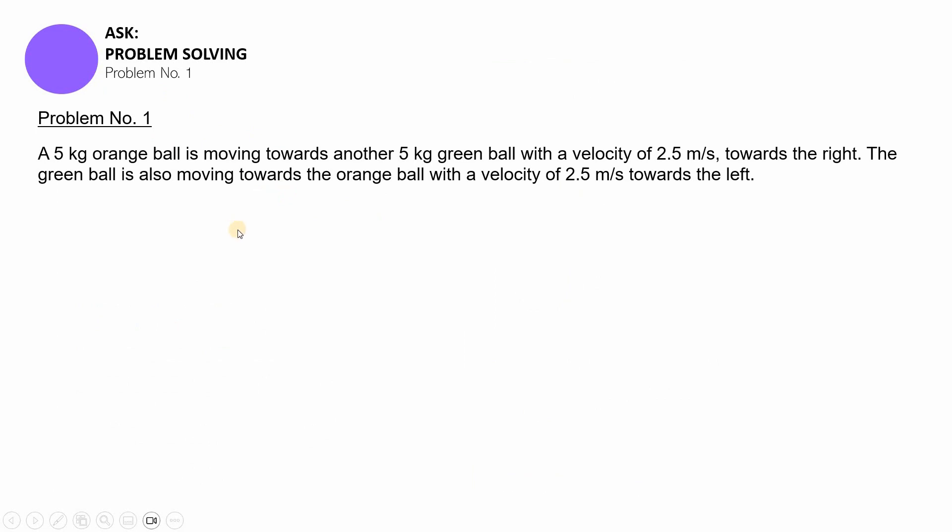So the problem goes, a 5 kilogram orange ball is moving towards another 5 kilogram green ball with a velocity of 2.5 meters per second. So there are two balls over here, an orange one and a green one. And then, we have to clarify that the orange ball is the one going towards the right. And then the green ball is also moving towards the orange ball, but it is with a velocity of 2.5 meters per second towards the left.